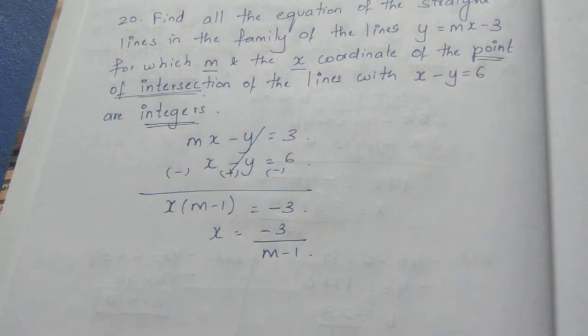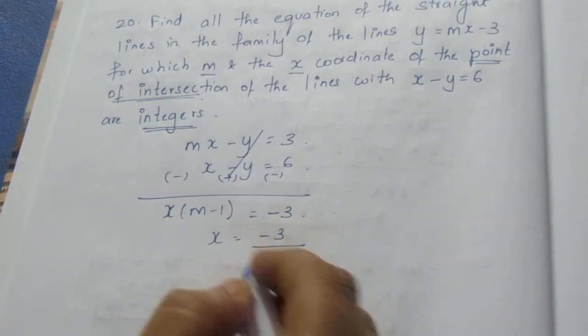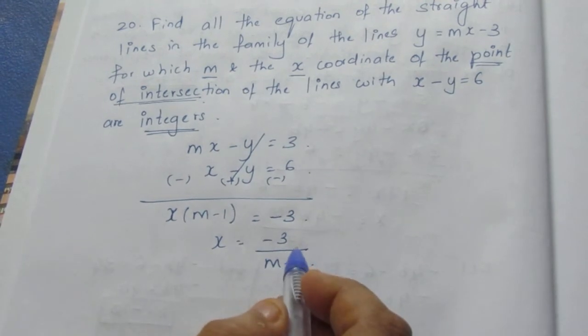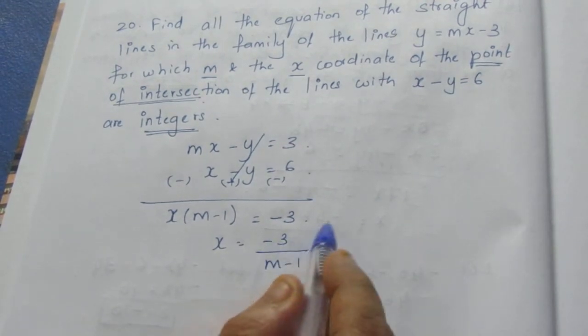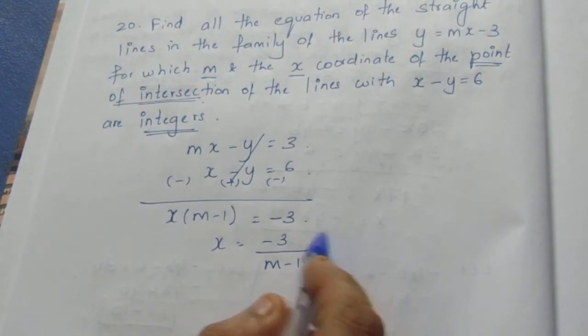Now, the condition is that both x and m must be integers. For x = -3/(m - 1) to be an integer, (m - 1) must be a divisor of -3.